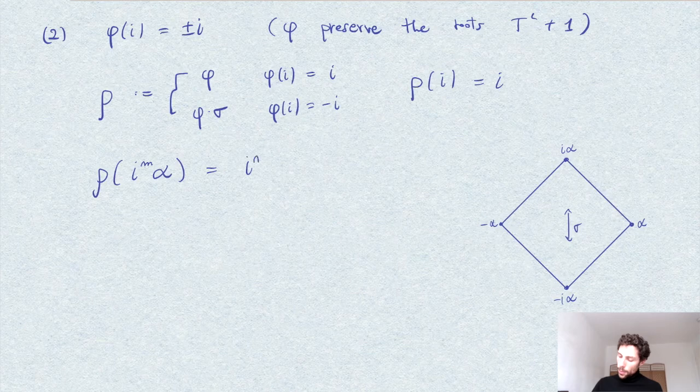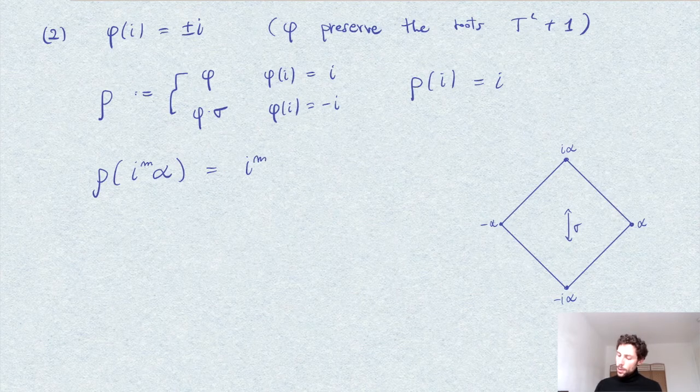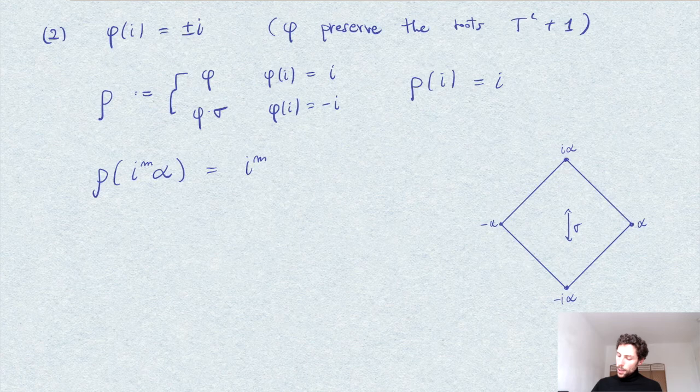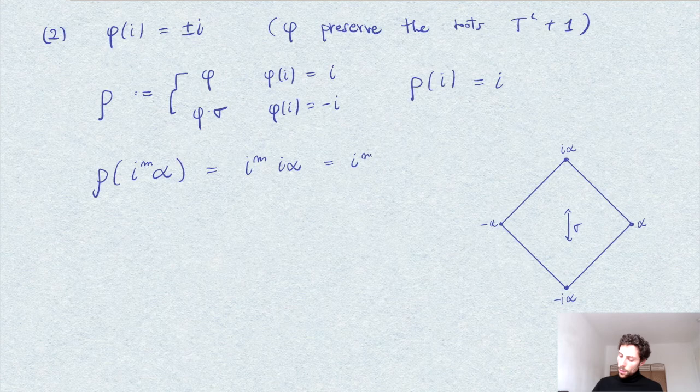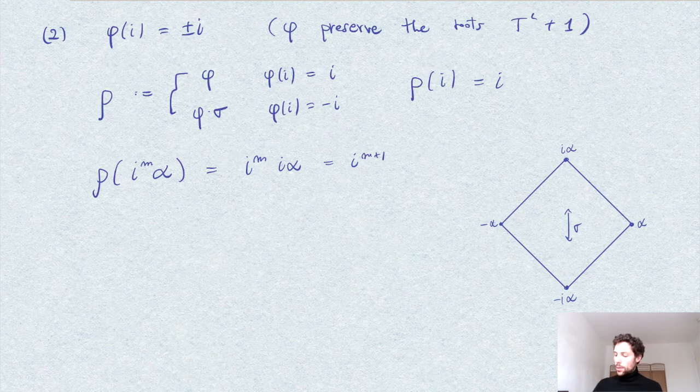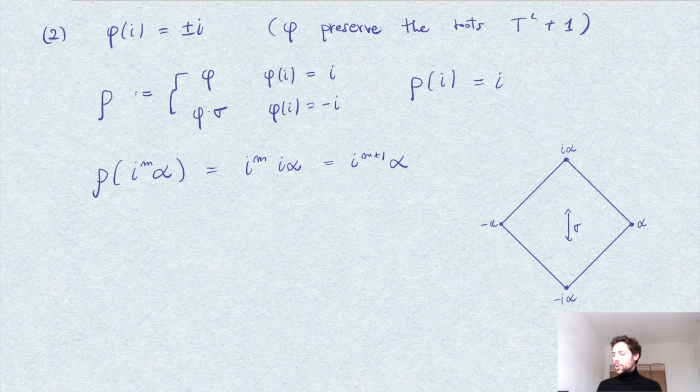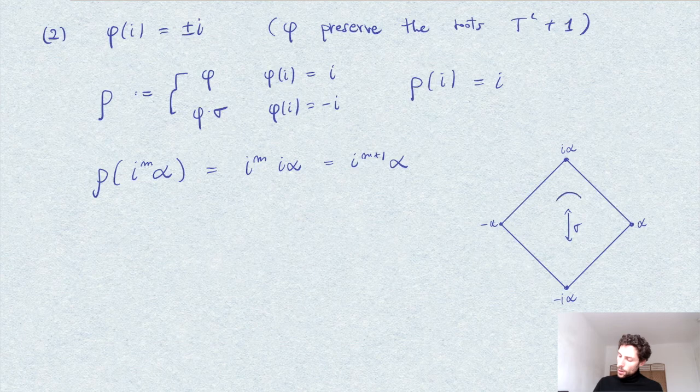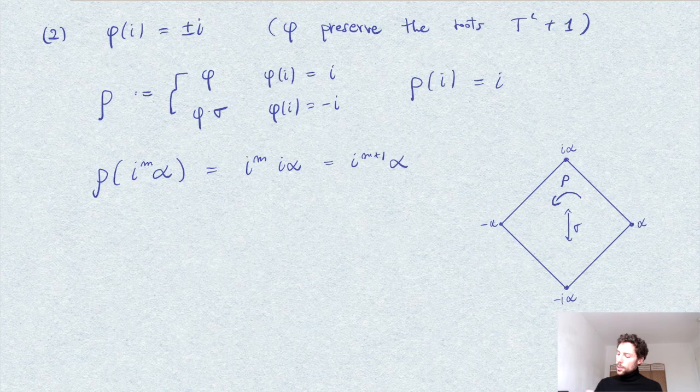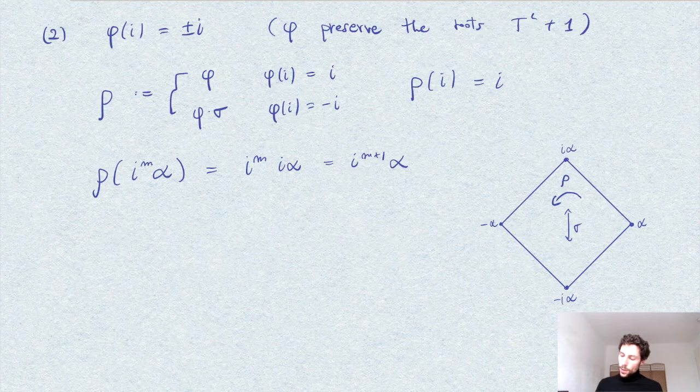And so this is this element here. So it acts as multiplication with i on this element. In other words, this rho is a rotation here about 90 degrees counterclockwise. So what we see is then clearly this rho is an element of our Galois group.